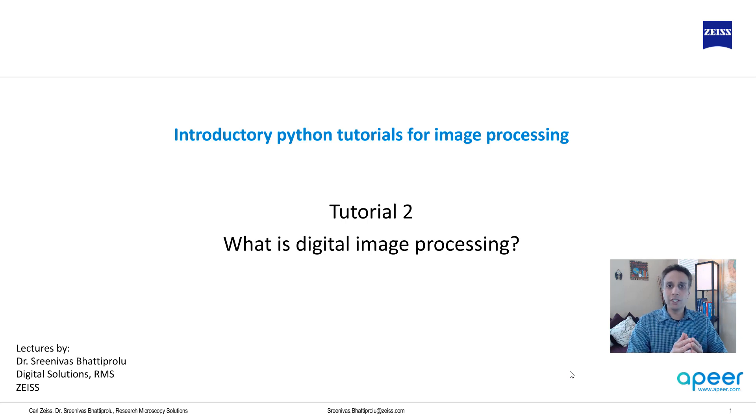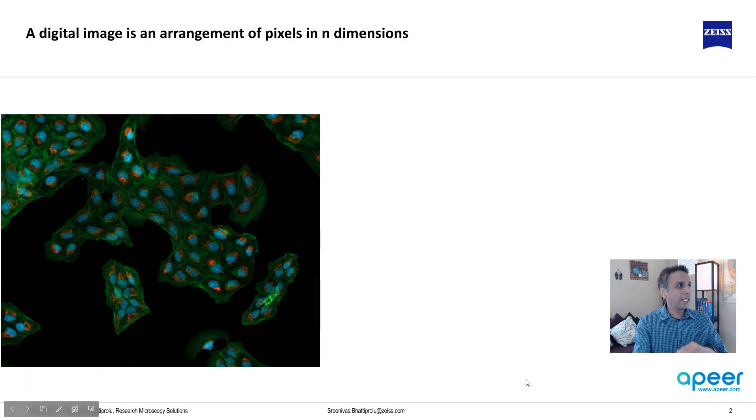So a digital image is, if you want to define it, it's an arrangement of pixels in n dimensions. For a two-dimensional image, you have x-axis, you have y-axis. And if you have a 3D image or a stack image, then you have the z-axis in addition to that.